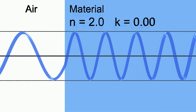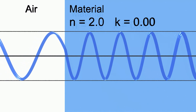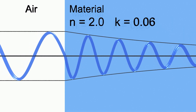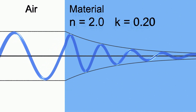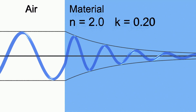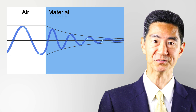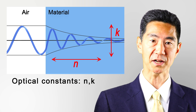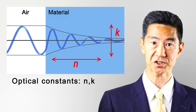K, the extinction coefficient, is an additional physical parameter that expresses the light absorption of materials. When K equals zero, the material is completely transparent and the amplitude of the wave does not change. But when the material has a high K, the amplitude of the electromagnetic wave decreases along the distance from the surface due to light absorption. The propagation of the electromagnetic wave inside the material is determined completely by these two physical quantities, n and k, called optical constants, which define the material's optical properties.